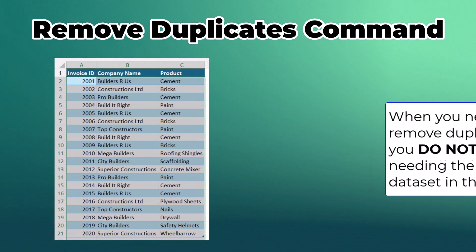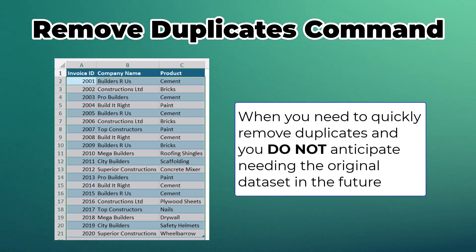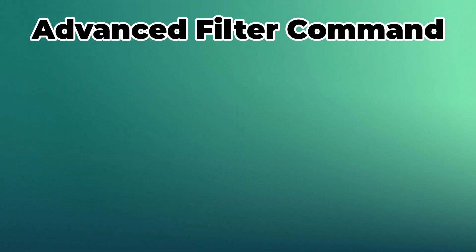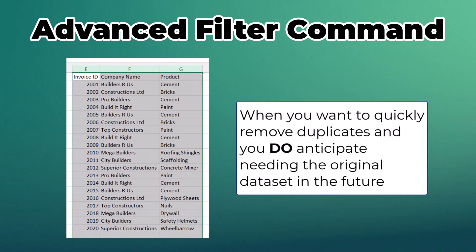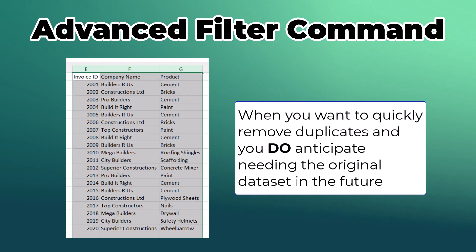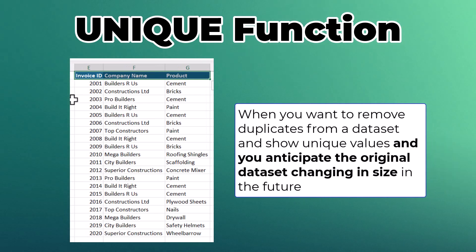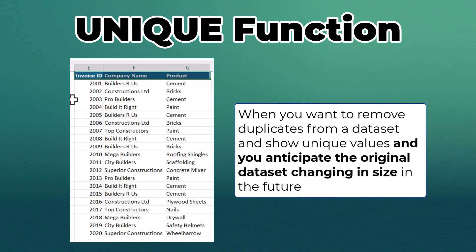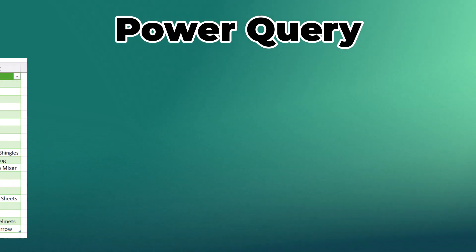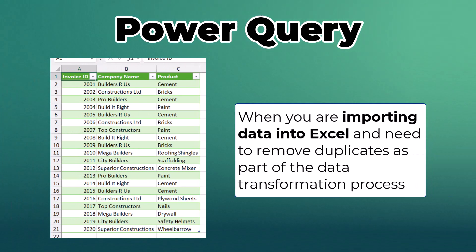To recap, there are four methods of removing duplicates in Excel. The first is the built-in Remove Duplicates command — use this when you need to quickly remove duplicates and do not anticipate needing the original dataset in the future. The second is the Advanced Filter command — use this when you do anticipate needing the original dataset. The third is the UNIQUE function — use this when you want to show unique values and anticipate the dataset changing in size. The fourth is Power Query — use this when you are importing data and need to remove duplicates as part of the data transformation process.